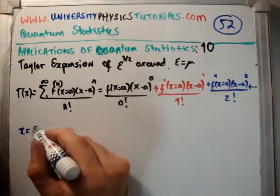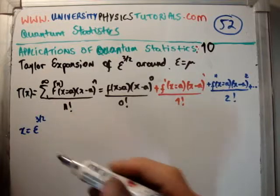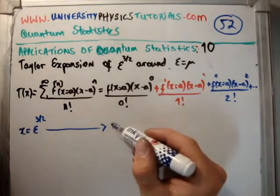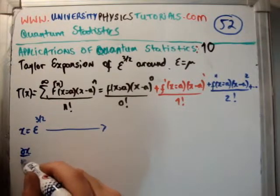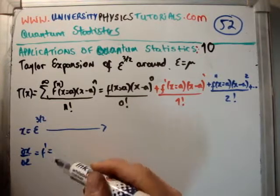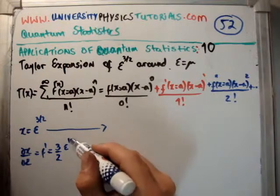Here what we have is x equal to ε^(3/2). So that means that dx/dε is going to be equal to f', which is equal to 3/2 times ε^(1/2).